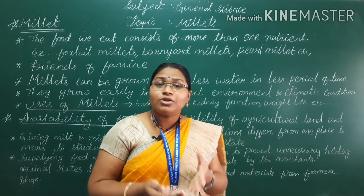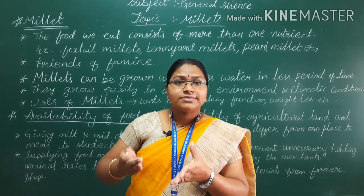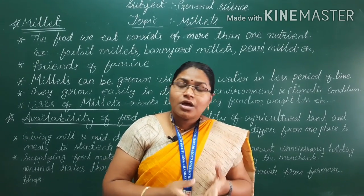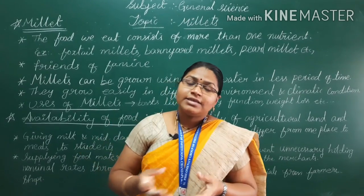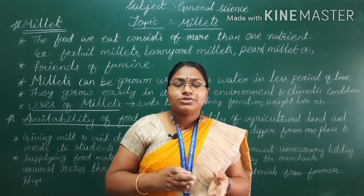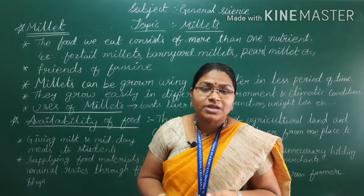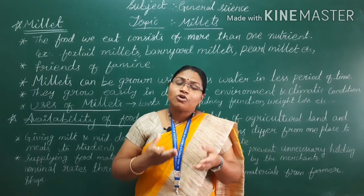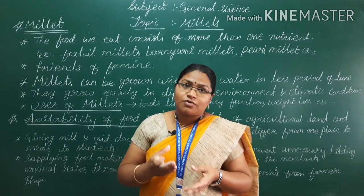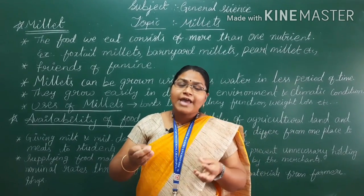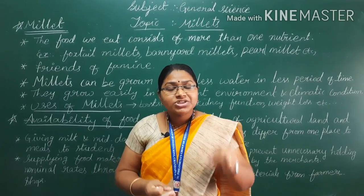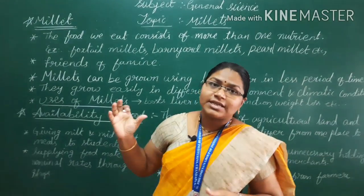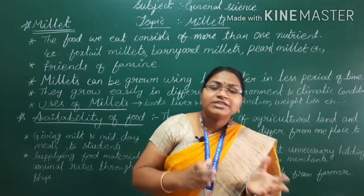Millets are also known as grains of the poor. Why? Because they do not require adequate water. In semi-arid regions, desert conditions, and semi-desert conditions, we can cultivate these millets. Even where annual rainfall is very low, we can still cultivate millets as crops in our agriculture fields. That's why millets are the friends of famine and friends of farmers.